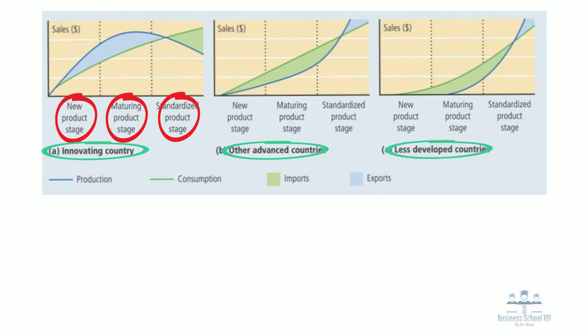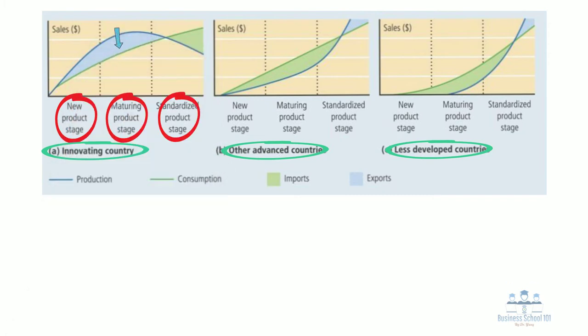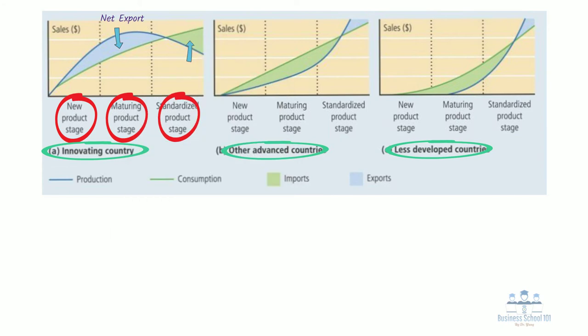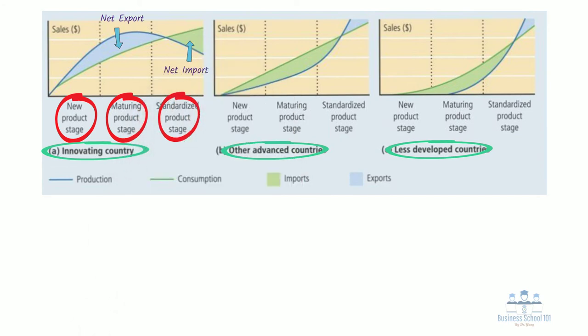In the graph, the blue line indicates the amount of production for the new product, and the green line indicates the amount of consumption. The blue area means that the country has a net export for the product. Contrarily, the green area means the country has a net import for the product.